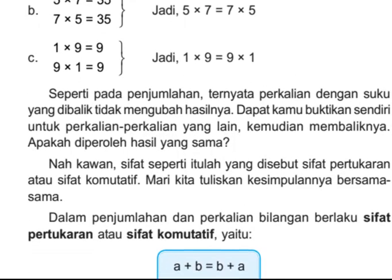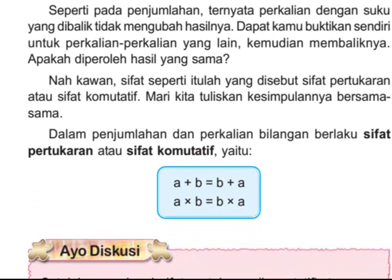Sekarang mari kita simpulkan. Komutatif itu artinya dapat ditukar: A plus B sama dengan B plus A. Misalkan A adalah satu dan B adalah lima, maka satu tambah lima: enam. Lima tambah satu: juga enam. Berarti A tambah B sama dengan B tambah A. Perkalian: misalkan satu kali lima sama dengan lima, lima kali satu juga sama dengan lima. Berarti perkalian mempunyai sifat komutatif.